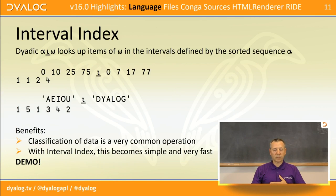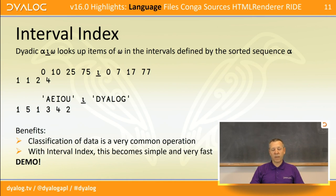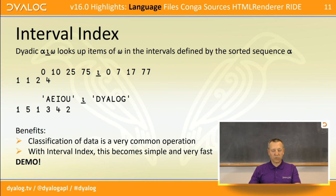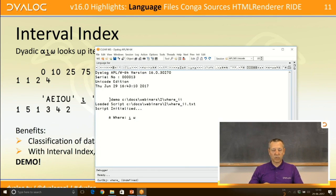The dyadic form of IOTA underbar is the interval index, which allows you to classify data into buckets. The left argument — in this case 0, 10, 25, 75 — marks the partitions in a classification, and the result tells you into which bucket an argument fits. It works not only with numeric and character vectors but also with matrices.